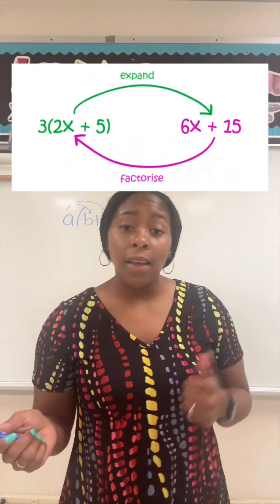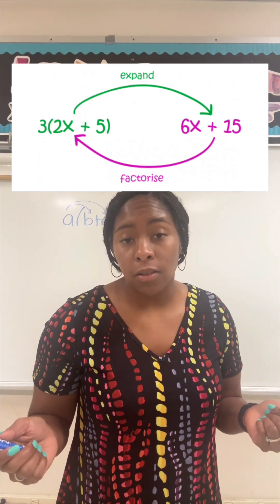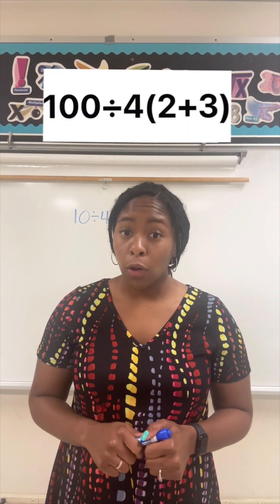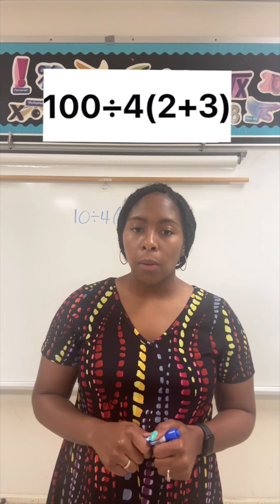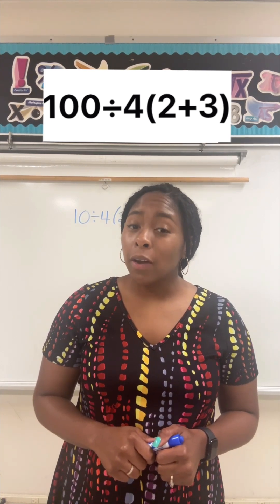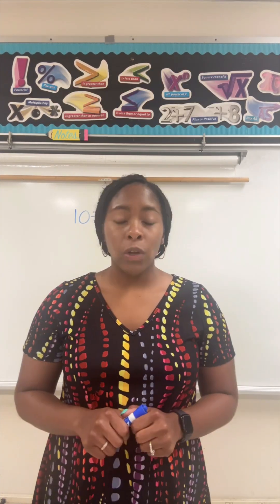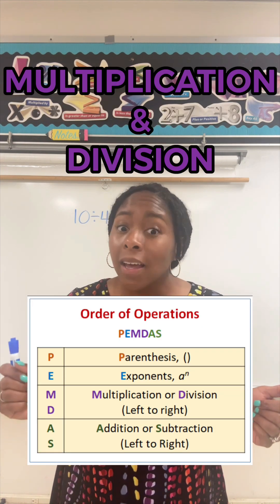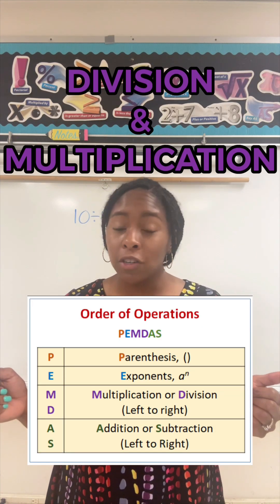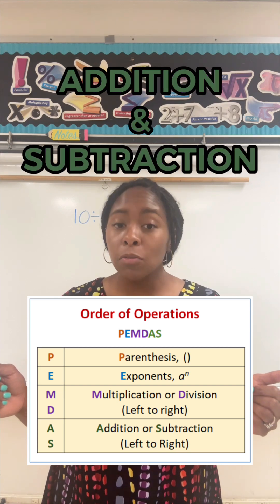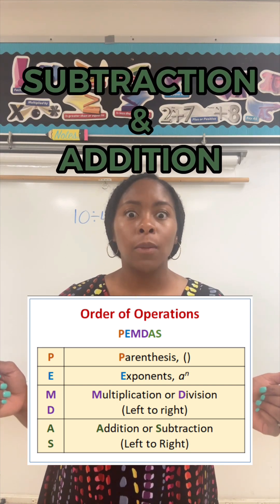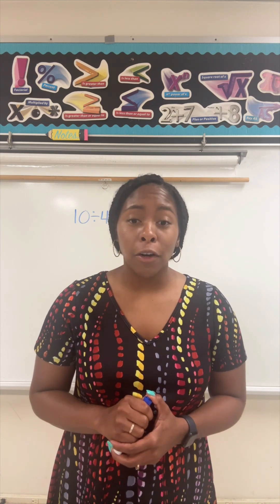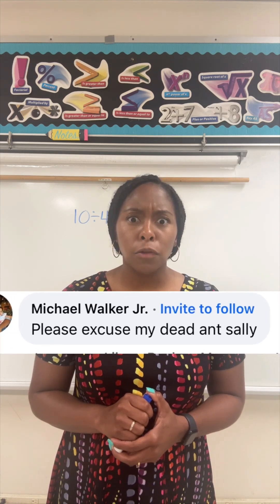The distributive property is great for expanding, factoring, and simplifying expressions. So when we have a numerical expression like this one that has everyone in a chokehold, yes, we can use the distributive property — but we still have to follow the correct order of operations to simplify: parentheses, exponents, multiplication and division (left to right, whichever comes first), addition and subtraction (left to right, whichever comes first) — please excuse my dear aunt Sally, as many of you remember.